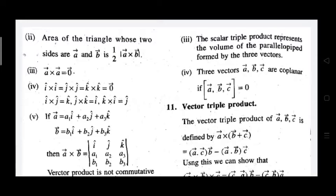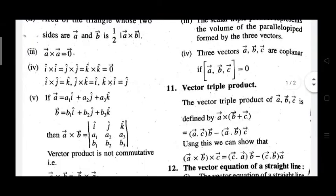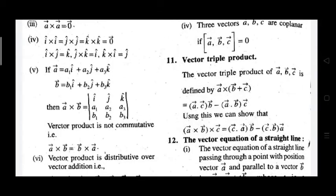For unit vectors: i·i = j·j = k·k = 0. To find the cross product using the determinant method, we set up a 3x3 matrix with the first row as i, j, k, the second row as the coefficients of vector A: a1, a2, a3, and the third row as the coefficients of vector B: b1, b2, b3.